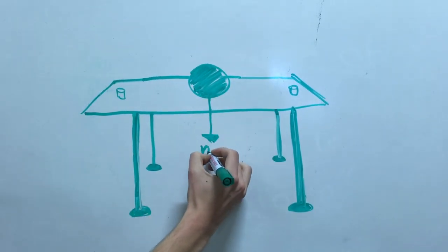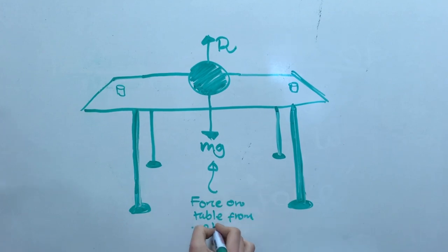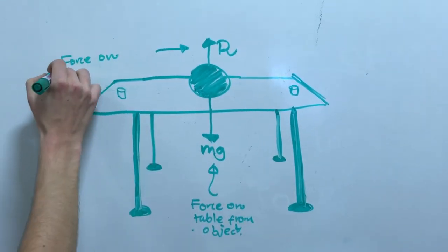And this law can simply be shown by an object on a table where the reaction force is the table pushing back against the object.